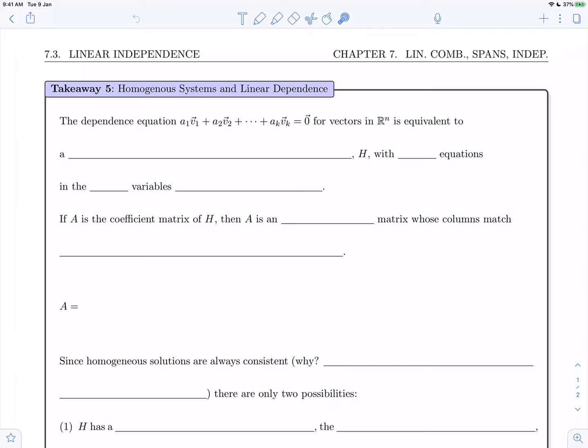The dependence equation a1v1 plus a2v2 all the way through akvk equals 0 for vectors is equivalent to a homogeneous linear system, which we'll call H.